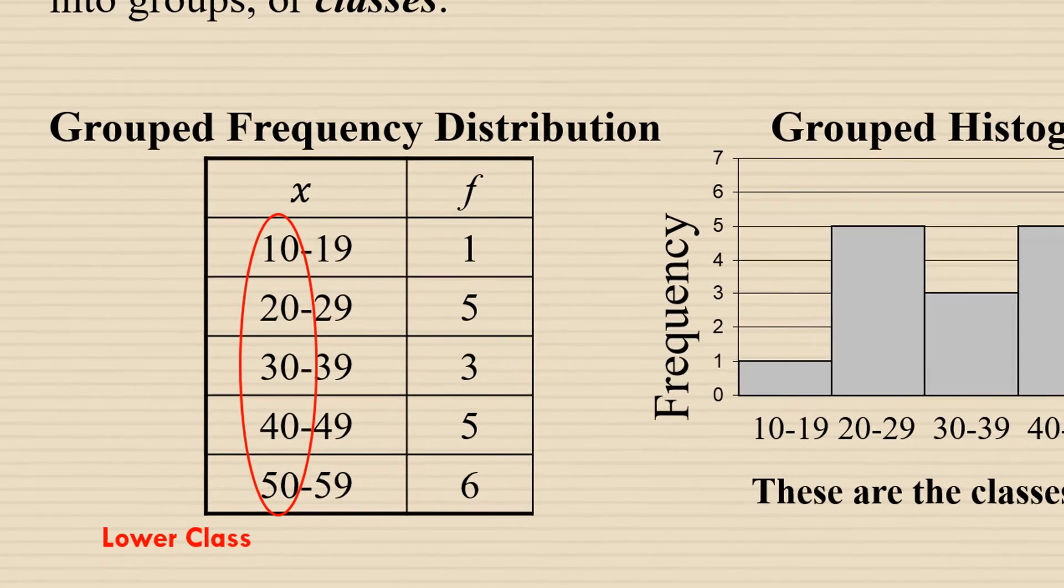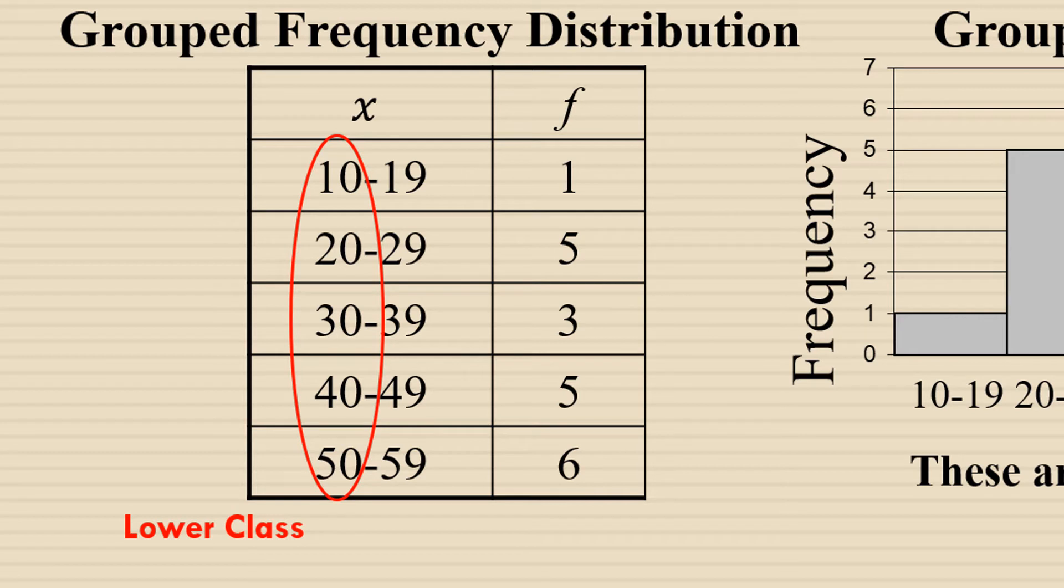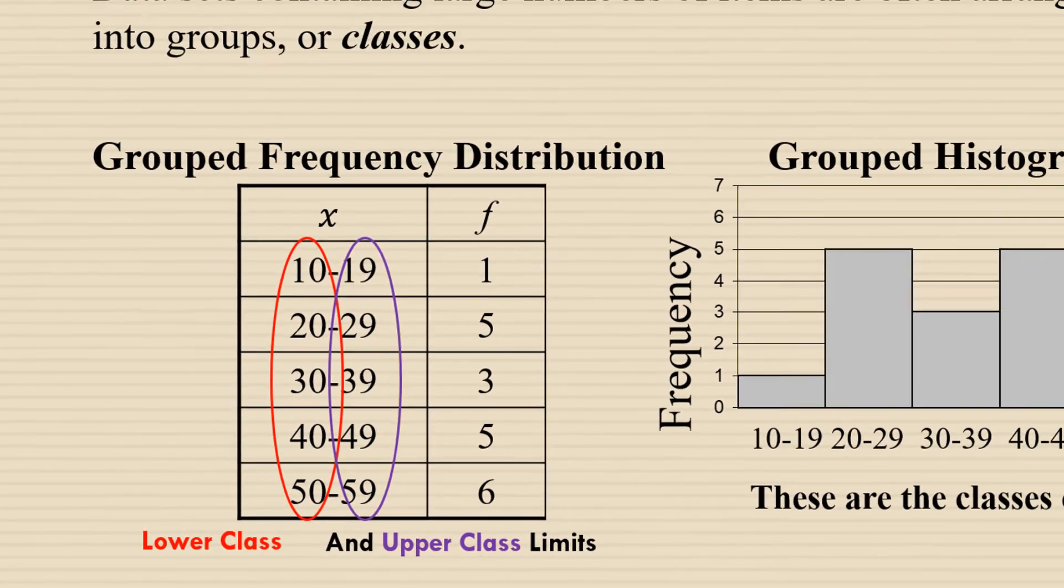The numbers 10, 20, 30, 40, and 50 are called the lower class limits, and the numbers 19, 29, 39, 49, and 59 are called the upper class limits.